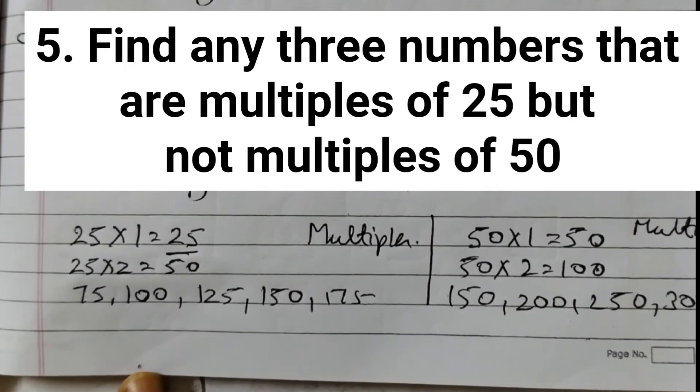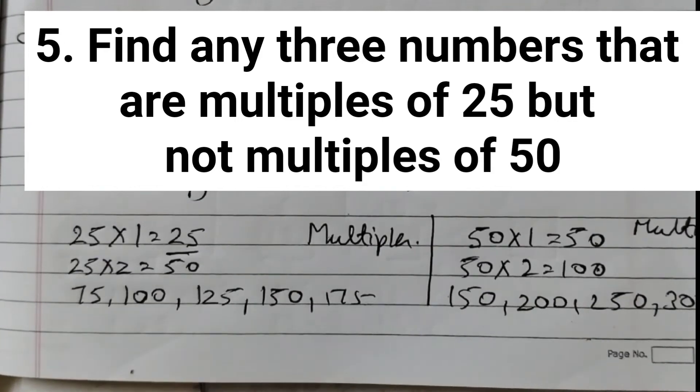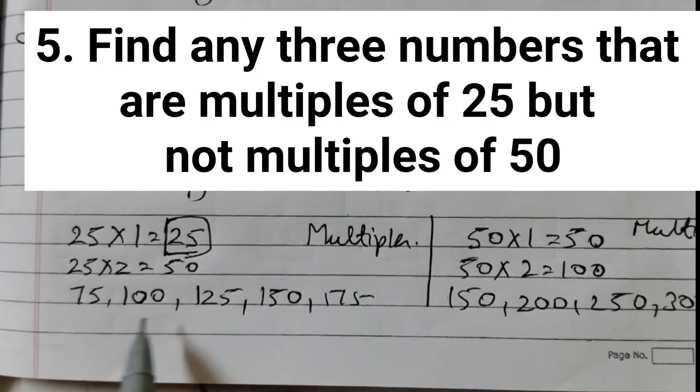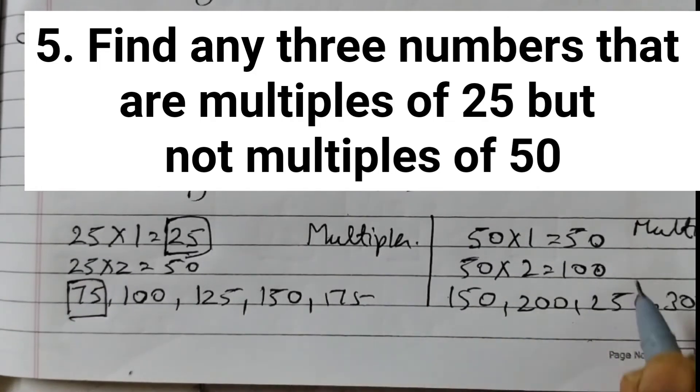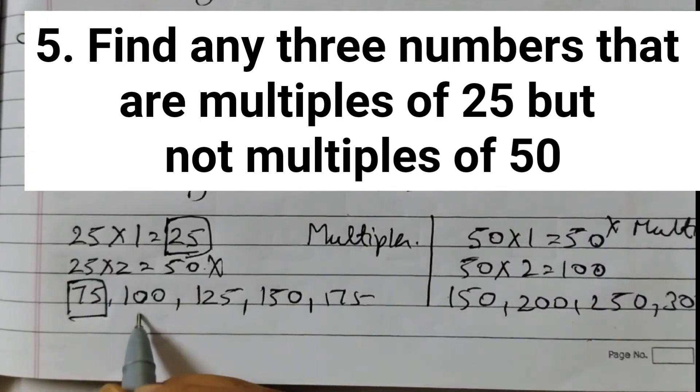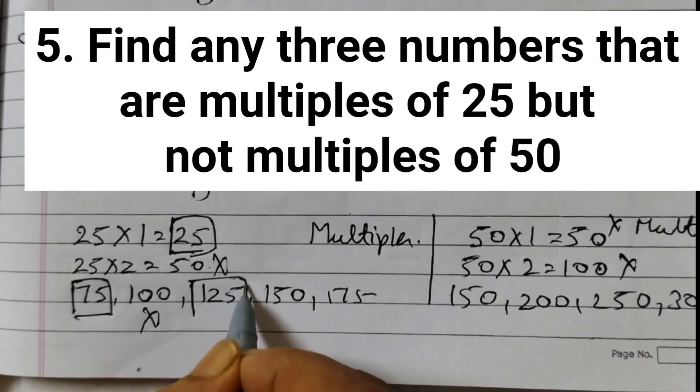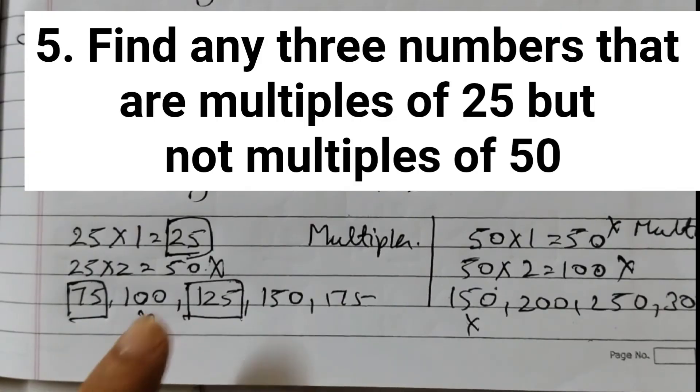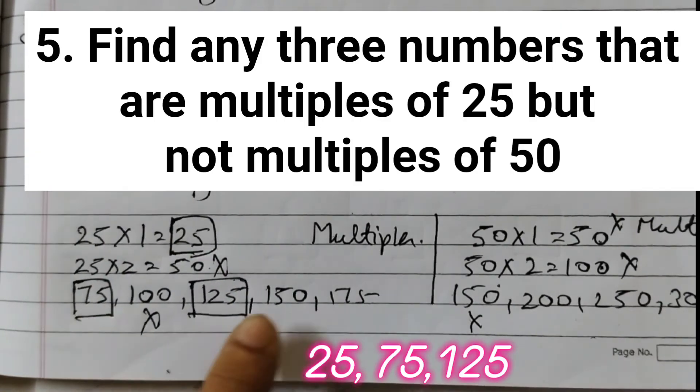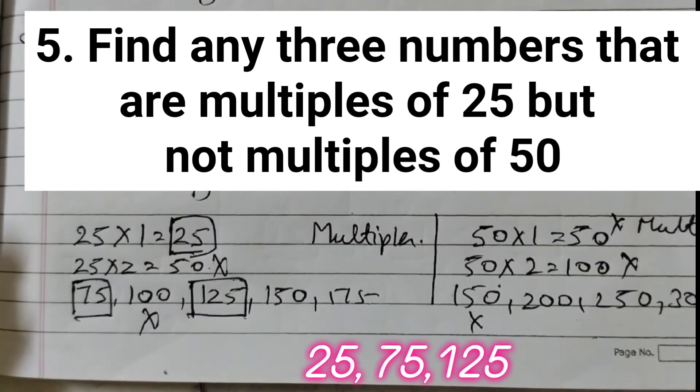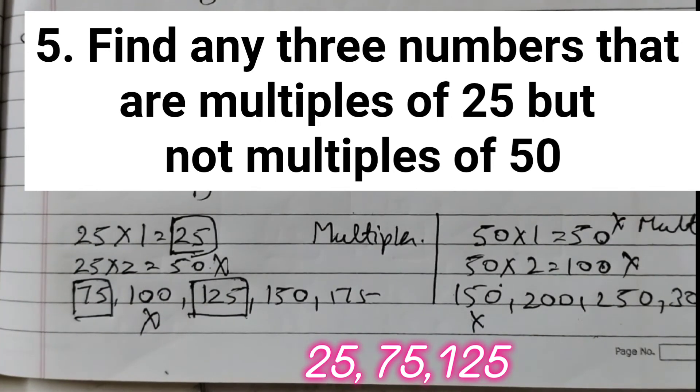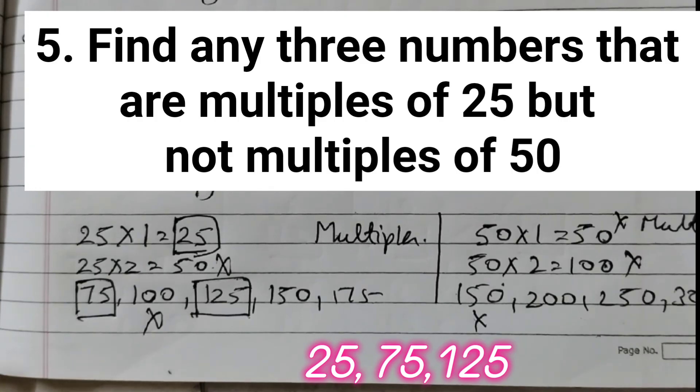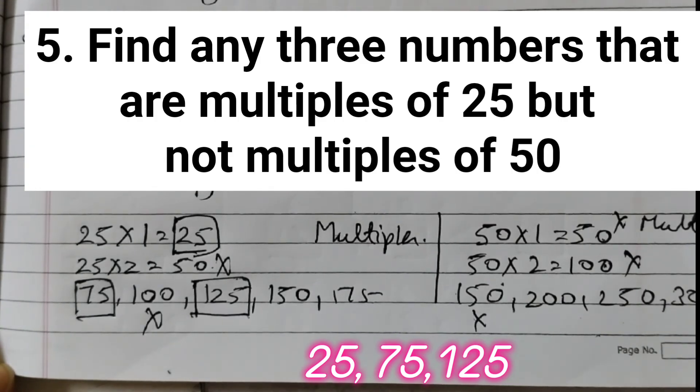Right? So the question is find any 3 numbers that are multiples of 25 but not multiples of 50. So multiples of 25, this one we can take because here we don't see that. Then 75 is not there. See 50 is there, so we cannot take this number. 100 is also there, so we cannot take this number. And then we can take 125. 150 we cannot take. We just need 3 numbers. So you can take 25, 75, 125, 175. Any number which is multiple of 25 but not a multiple of 50. So you can take any 3 multiples of 25 which are not multiples of 50. So the answer can be different, that's fine. With this we complete question number 5. In the next video we will do question number 6 onwards. Thank you.